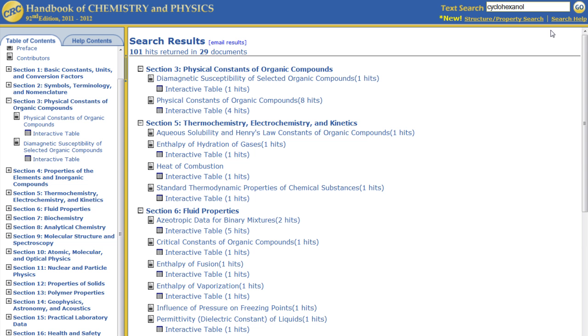Next, we will go over how to find information about a substance by using the structure/property search option. Click on the link located just below the text search box.